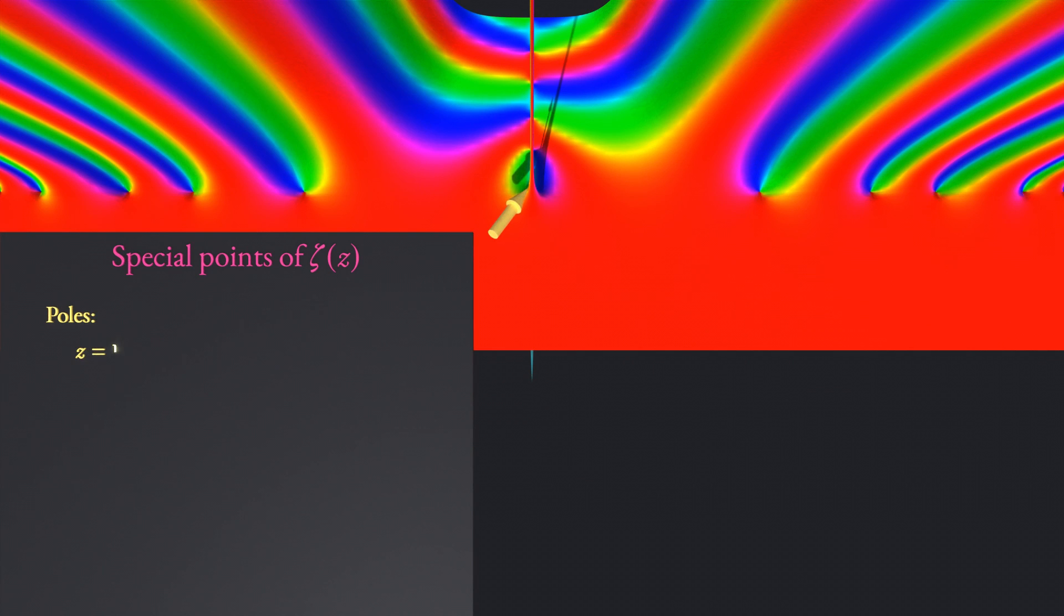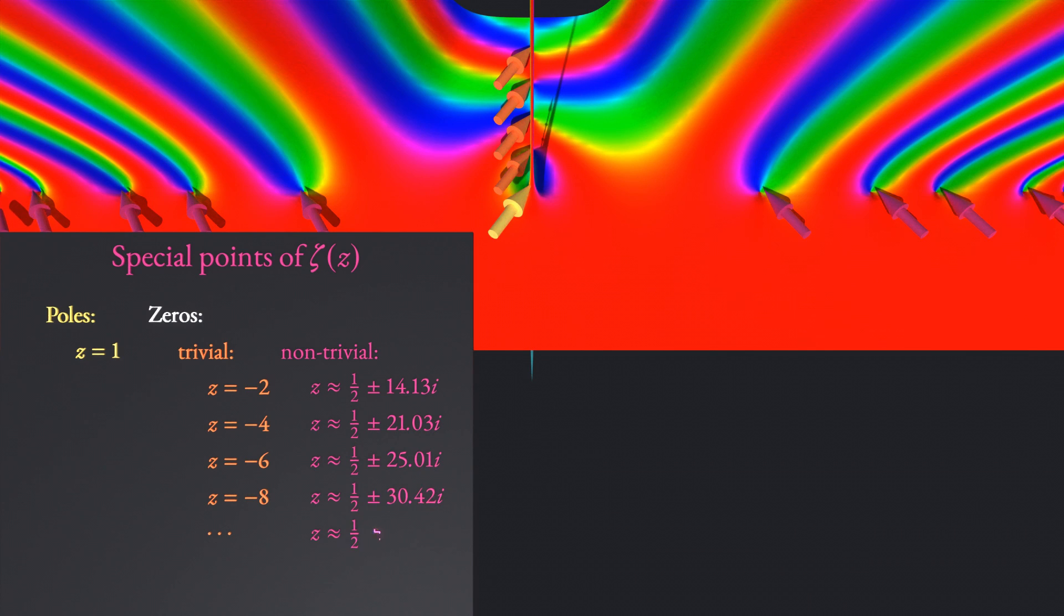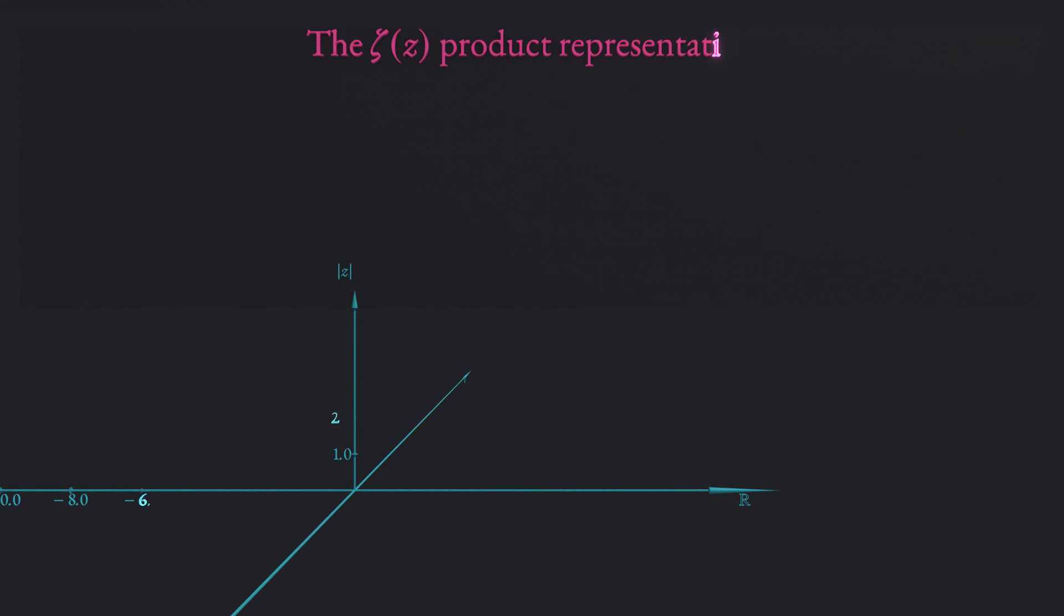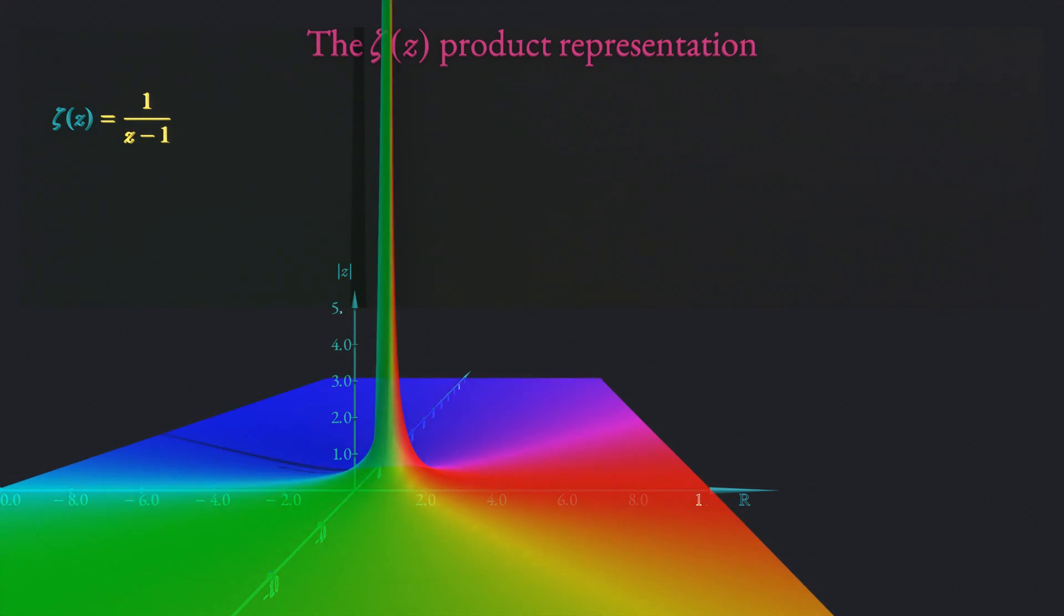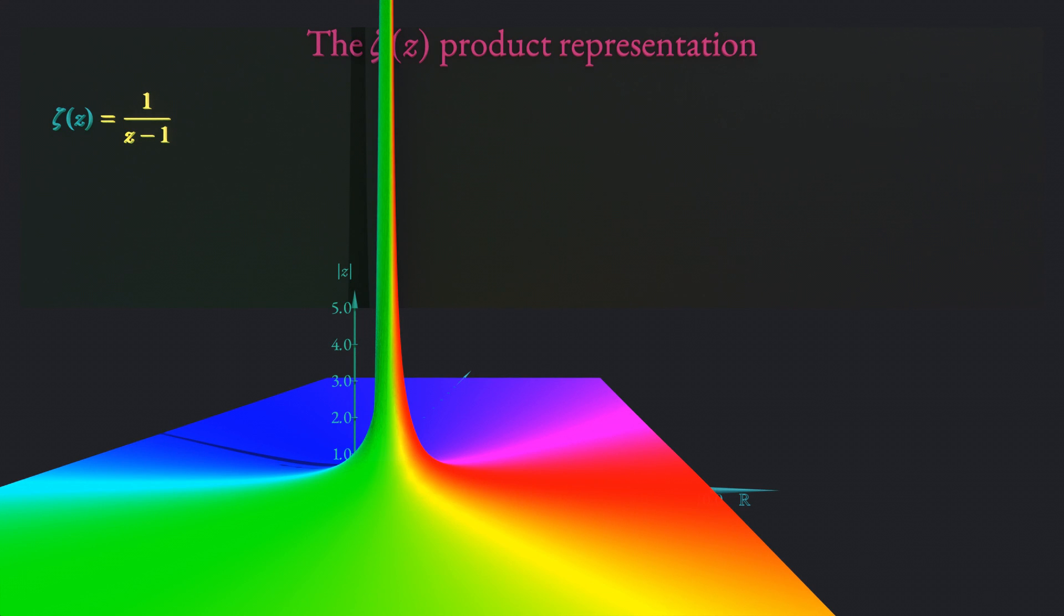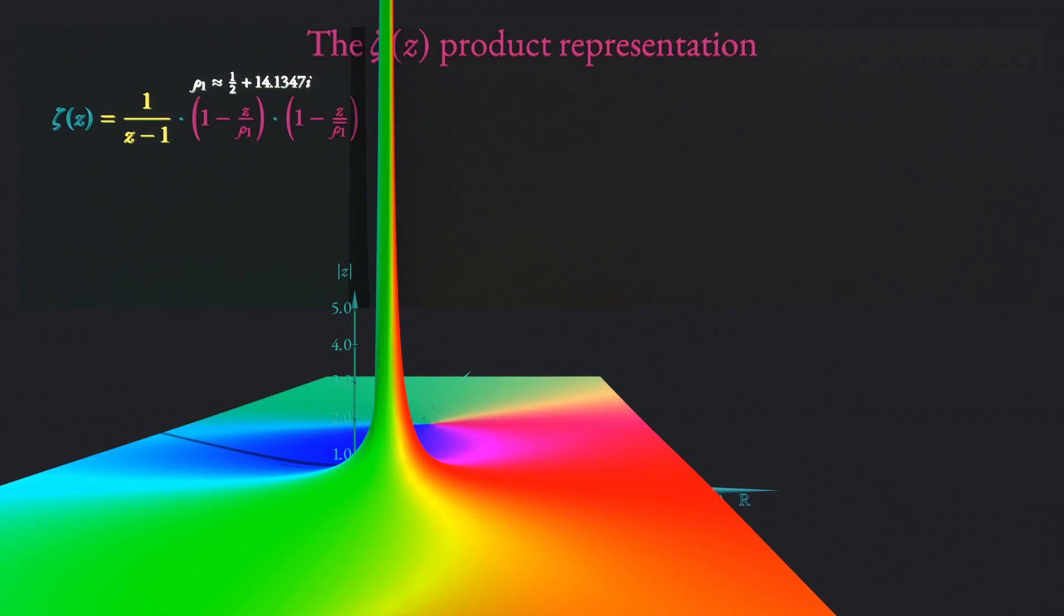For what follows, the important features of the zeta function are summarized. There is a pole at z equal to 1 and trivial zeros at every negative integer value. The non-trivial zeros are located on the critical line and a precise location can only be computed numerically. Interestingly, similar to the sine function, the zeta function can be expressed as a product of linear terms, where each of the terms corresponds to a zero or the pole at z equal to 1.